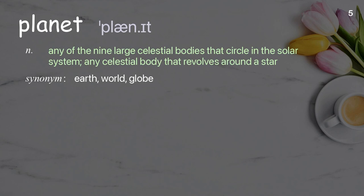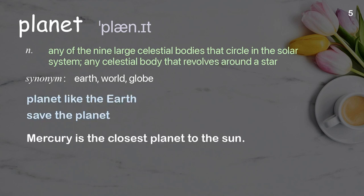Planet: Any of the nine large celestial bodies that circle in the solar system, or any celestial body that revolves around a star. Examples: Planet like the Earth, save the planet. Mercury is the closest planet to the sun.